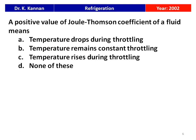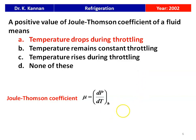A positive value of the Joule-Thompson coefficient means mu is greater than 0. For this case, the temperature drops during the throttling process — dT is negative. So when mu is positive (greater than 0), the temperature decreases during throttling.